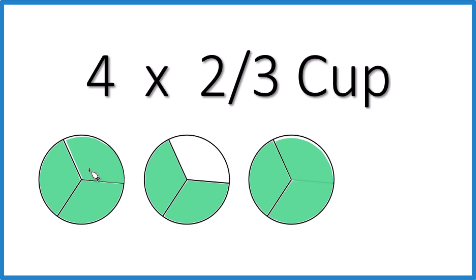So now you have one, two, that's two cups, and there we have two thirds left over. So four times two thirds, that's two and two thirds cups.